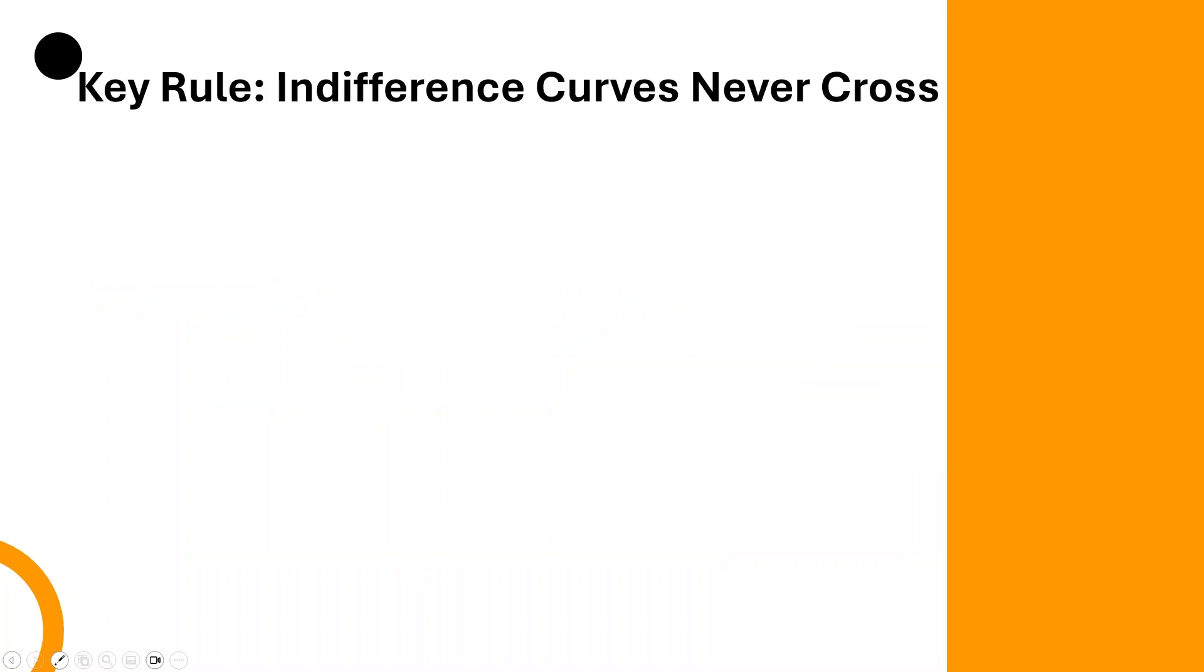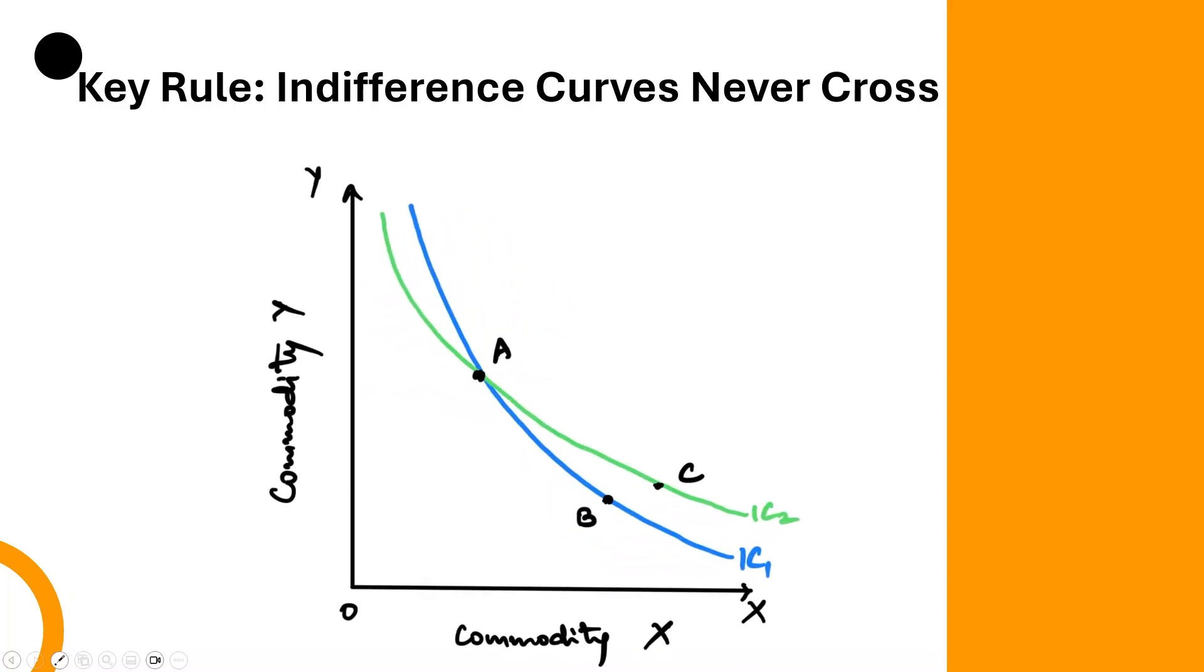One key rule to remember: indifference curves never cross. Why? If you look at this figure, you see that on this curve IC1, which is a blue IC1, A equals to B because these both combinations should give the same level of satisfaction to the consumer. But at the same time on IC2, we are showing that A equals to C. Now, this should mean that B equals C, which is not at all possible.